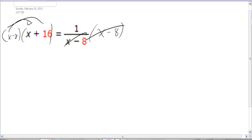So now I have to distribute through and this is going to end up giving me x squared plus 8x minus 128 equals 1, and so now I just have a quadratic to solve.